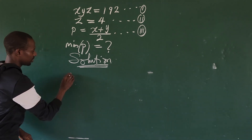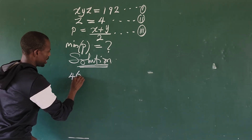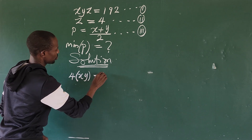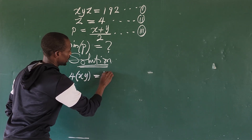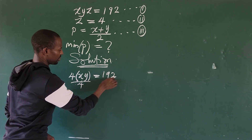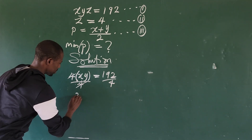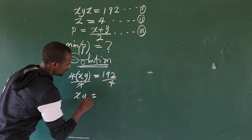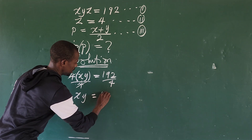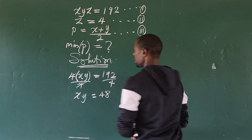From equation one, we substitute equation two into equation one. So this gives us: 4 times x times y equals 1 minus 2 times... we just divide through, and x times y equals 48.